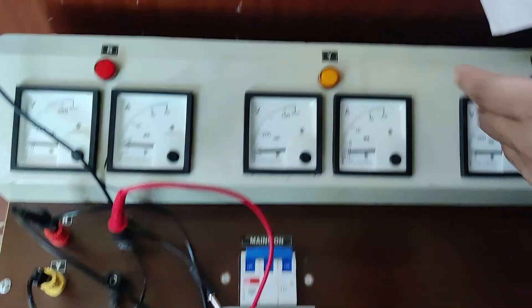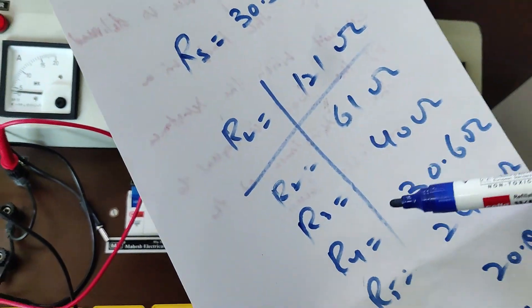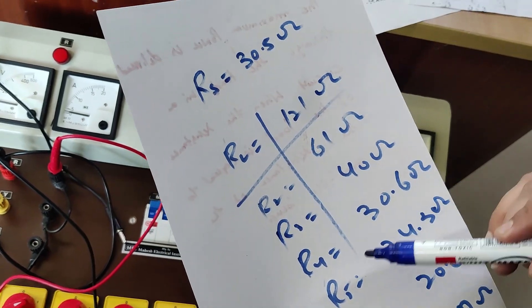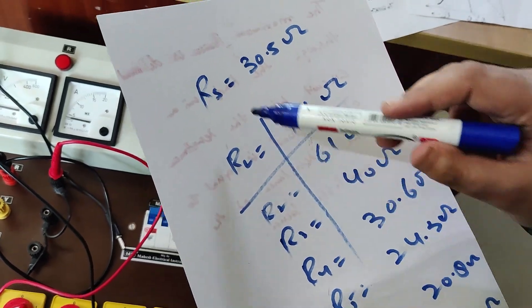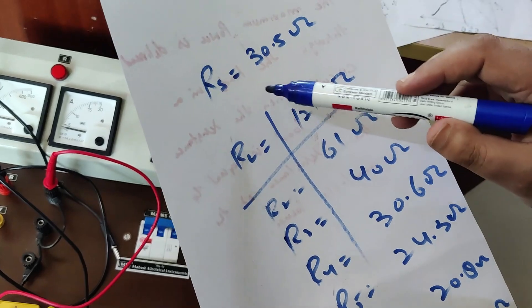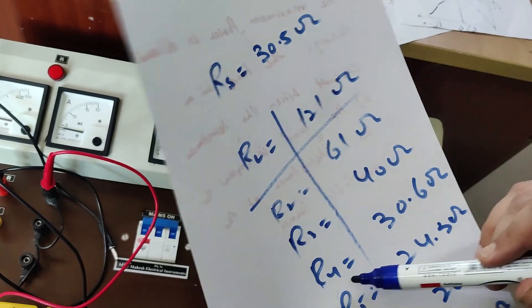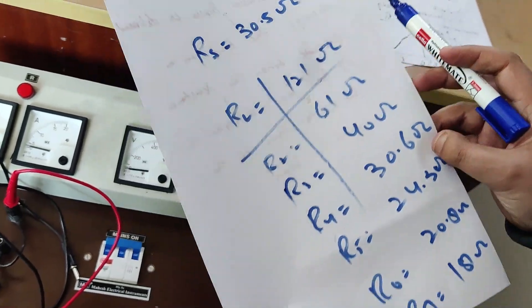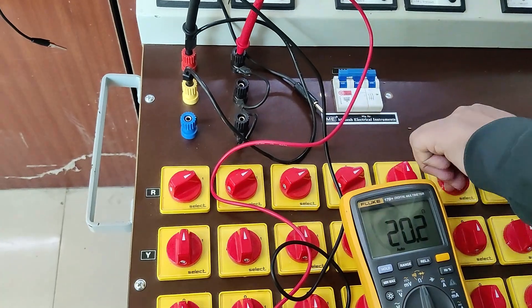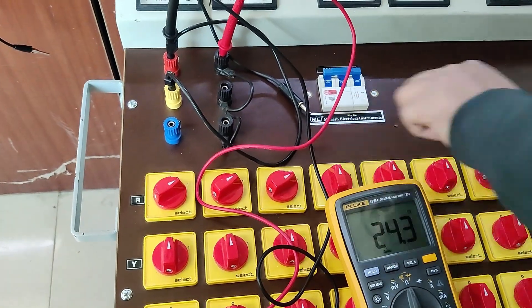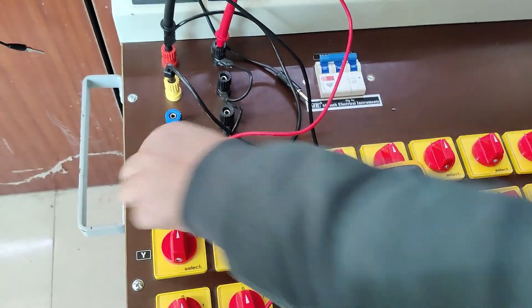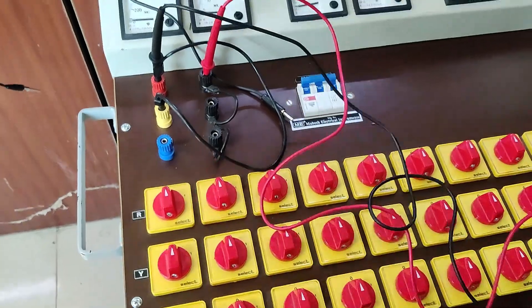Now we are saying we have the source resistance that is 30.5 ohm, and at R4 it is 30.6 ohm. So that means when we reach at R4, the source resistance will be equal to the load resistance — at that time maximum power should be delivered. We will now do this practically: when we reach step 4, we will see whether the maximum power will be delivered or not.